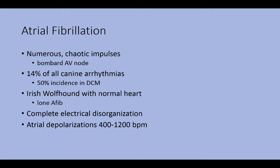Atrial fibrillation is a subset of supraventricular tachycardia characterized by numerous chaotic impulses bombarding the AV node. It accounts for up to 14% of all canine arrhythmias and is thought to have a 50% incidence in dilated cardiomyopathy dogs. The Irish Wolfhound is an interesting exception — they often have a normal heart with something called lone afib, where atrial fibrillation occurs with a slower ventricular rate and is often not treated.